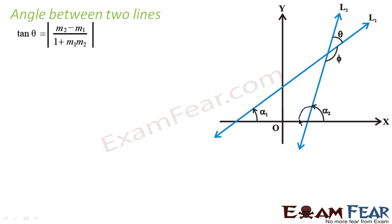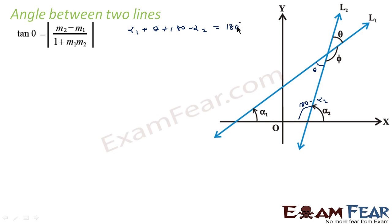If this angle is alpha 2, this will become 180 minus alpha 2, because this is a straight line. This is theta, so this also becomes theta — vertical angles. We will add all the angles of this triangle: alpha 1 plus theta plus 180 minus alpha 2 equals 180 degrees. The 180s cancel, so theta is equal to alpha 2 minus alpha 1. This is our first equation.